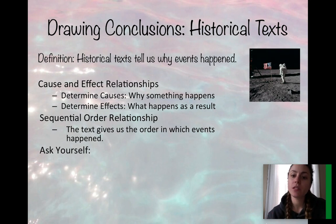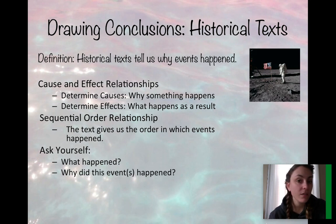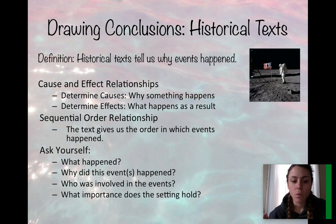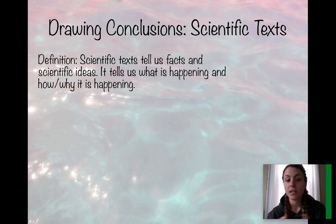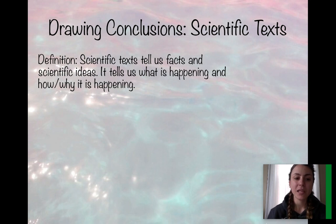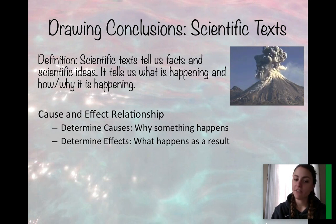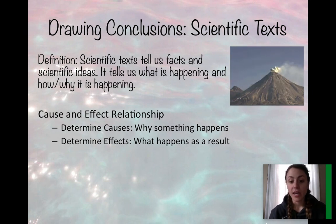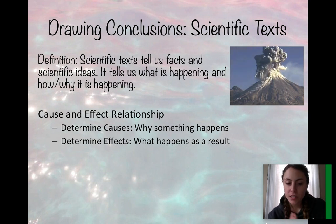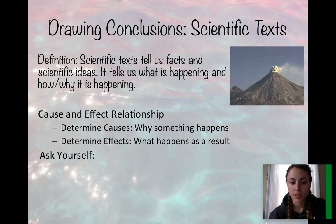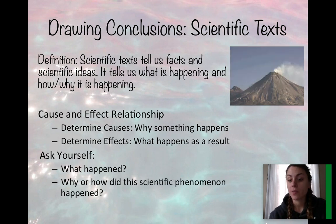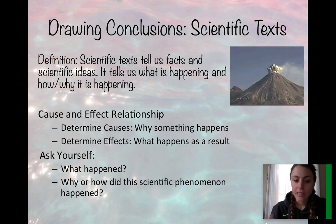To draw conclusions in historical texts, we must ask ourselves: What happened? Why did the events happen? Who is involved in the events? And what importance does the setting hold? For scientific texts, which tell us facts and scientific ideas about what is happening and why or how — like our volcanic eruption example — the relationships are also cause and effect. We must determine why something happens and what happens as a result. The key questions when drawing conclusions in a scientific text are: What happened? And why or how did this scientific phenomenon happen?